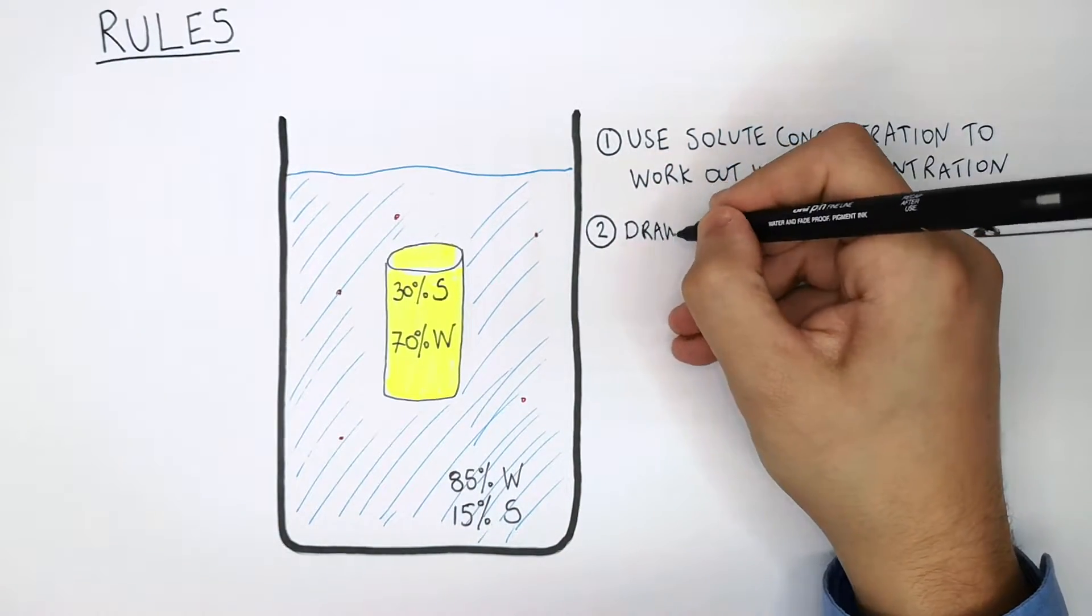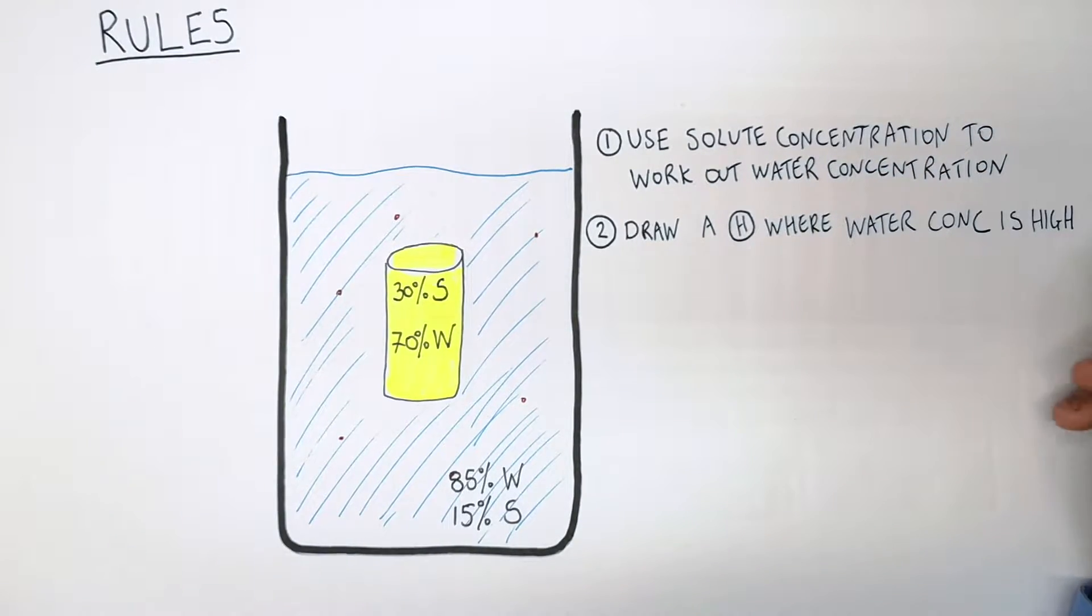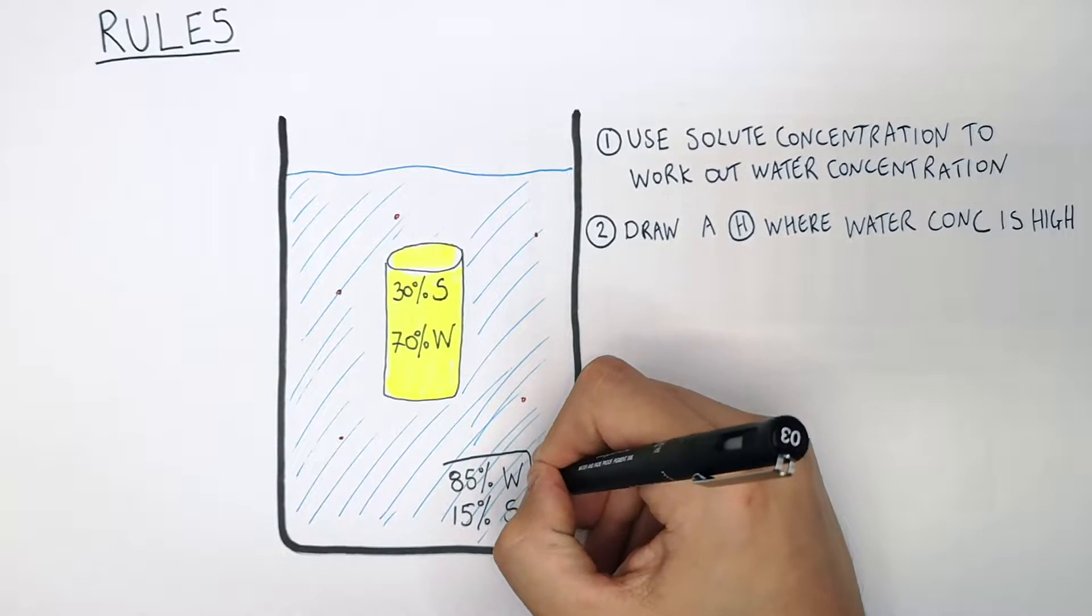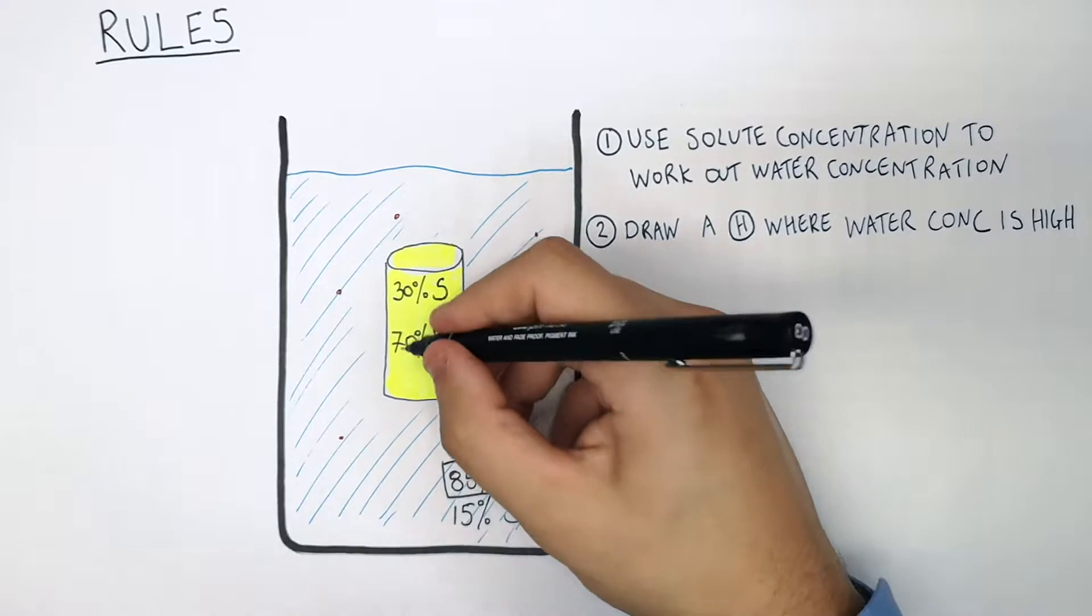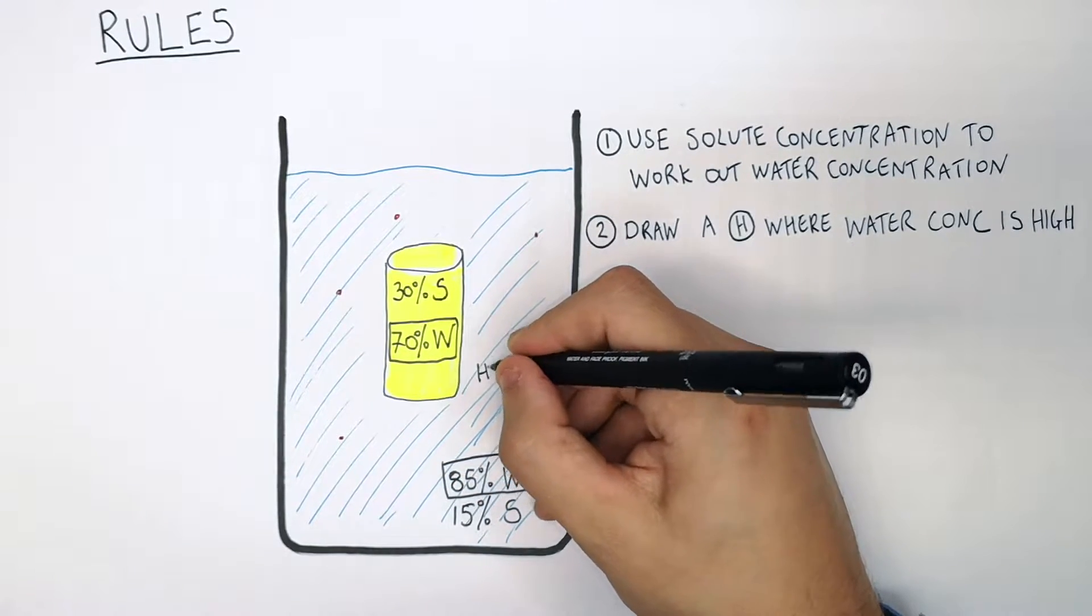Number two, you now draw a H where the water concentration is high. So 85% is higher than 70, so now we know that the higher concentration is in the sugar solution in the beaker than the water that is inside the potato. So we draw a H.